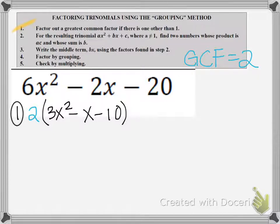and then my trinomial becomes 3x squared minus x minus 10. Since my a value is 3, I want to use the grouping method, or the ac method. So I want to find the product of a times c, so it's going to be 3 times negative 10, that's negative 30.